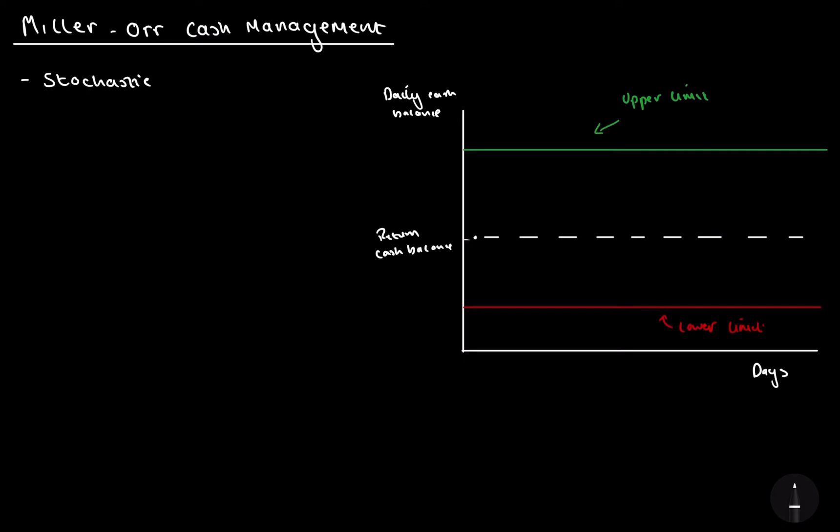Let's say we are at the return point, the return cash balance. So let's say we receive quite a lot of cash inflows, which we weren't expecting. So it keeps on rising, maybe have some falls, some drops, but then it reaches our upper limit. When it reaches our upper limit, this is a signal to buy marketable securities. And when I say marketable securities, these are investments which bring in a high interest, let's say between 8% to 10%.